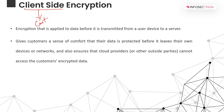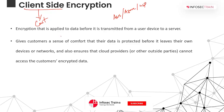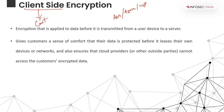Client-side encryption basically gives customers comfort that the data is protected before it leaves their own devices or networks. So if I am storing my data in AWS, Azure, or GCP, with client-side encryption I have the trust that even the cloud service provider will not have any visibility or control over my data, because it is completely encrypted before I upload it to the cloud platform, and key management stays with me.